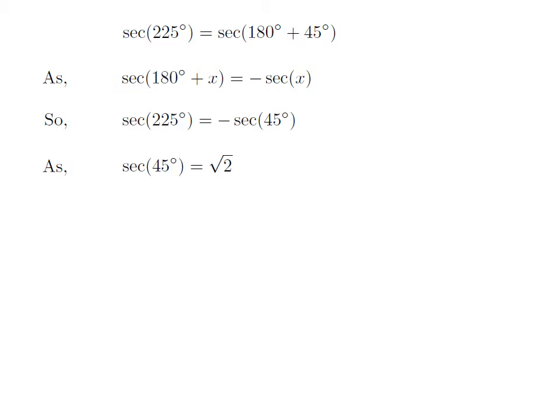We know the value of secant of 45 degrees is equal to square root of 2. So we get the value of secant of 225 degrees is equal to minus square root of 2.